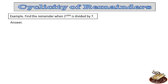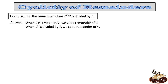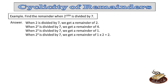When 2 is divided by 7, we get a remainder of 2. When 2 squared is divided by 7, we get a remainder of 4. When 2 cubed is divided by 7, we get a remainder of 1. When 2 raised to the power 4 is divided by 7, we get a remainder of 2. Now obviously, 2 raised to the power 4 is 16, and 16 when divided by 7 gives a remainder of 2.